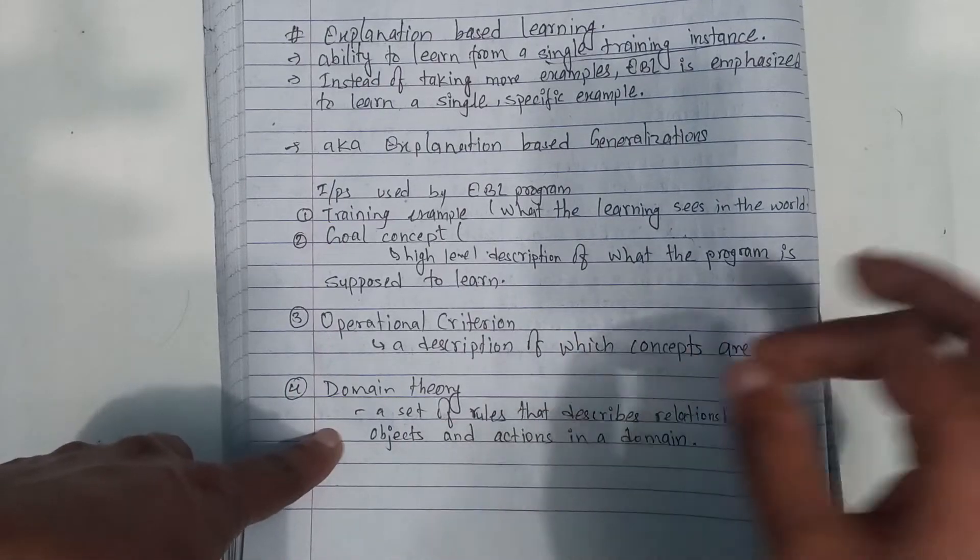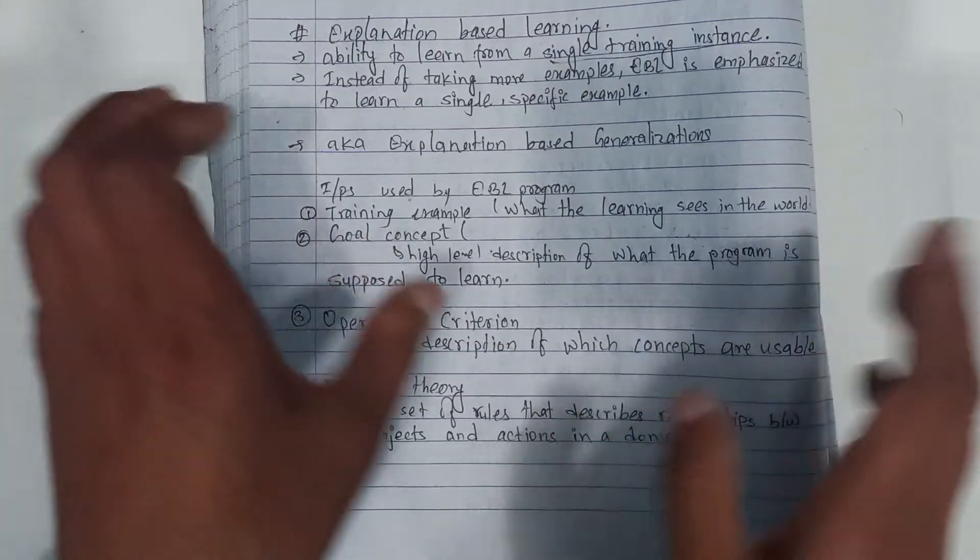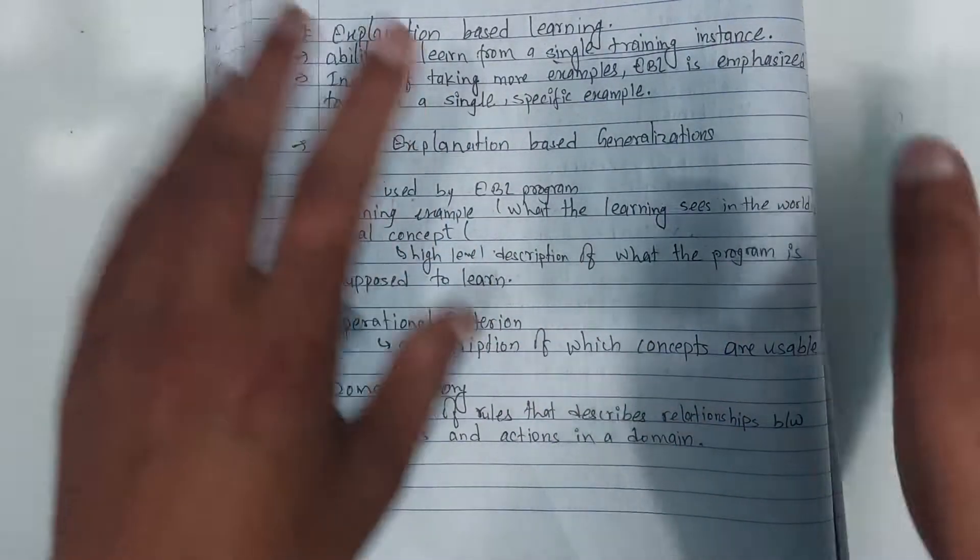What is the domain? The set of rules that describes the relationship between objects and actions in the domain. You will find the domain example. So, I can understand the understanding of the domain means.